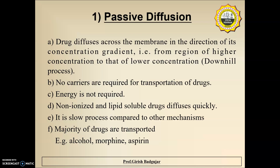Examples of drugs transported by passive diffusion include alcohol and morphine. So this concludes the first process, passive diffusion.